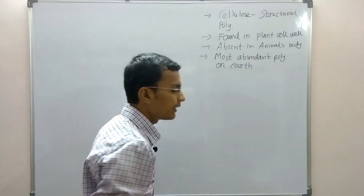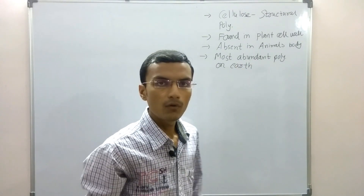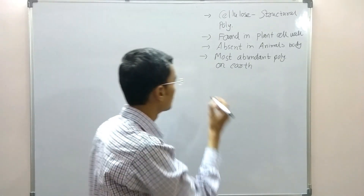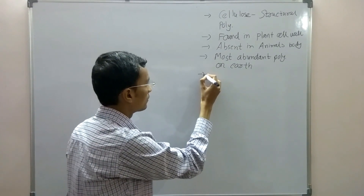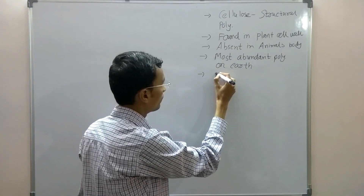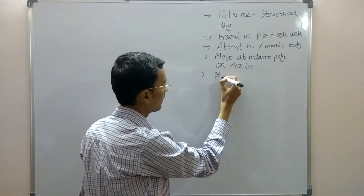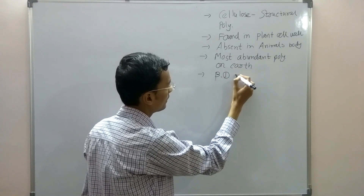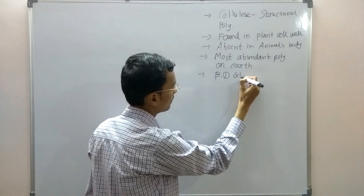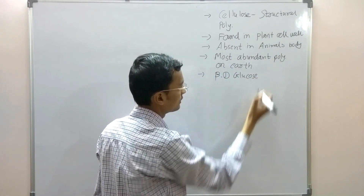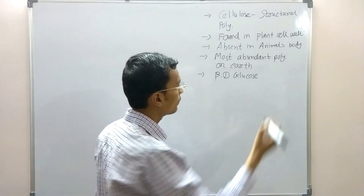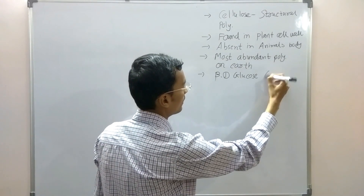Cellulose is made up of beta-D glucose molecules linked with beta-1,4 bonds.